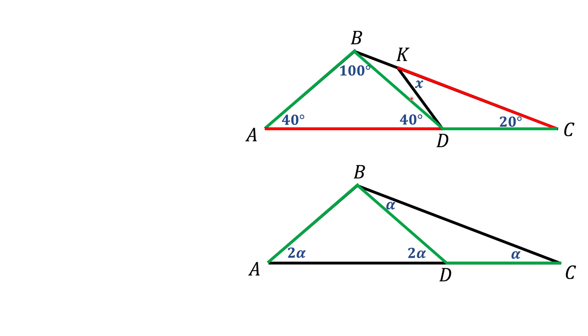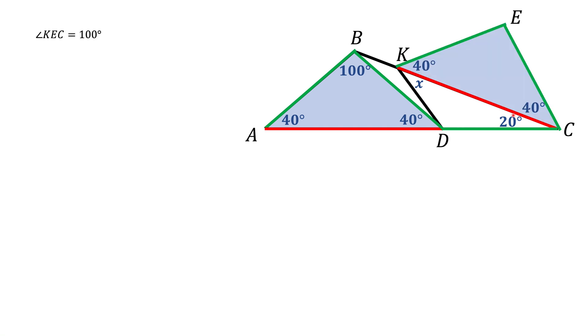So one idea would be to look at this triangle ABD and construct exactly the same triangle on this red line CK. In this case, these blue triangles are going to be congruent. Angles at the base here are the same as angles here, 40 degrees. And this angle E will be the same as this angle B of 100 degrees.